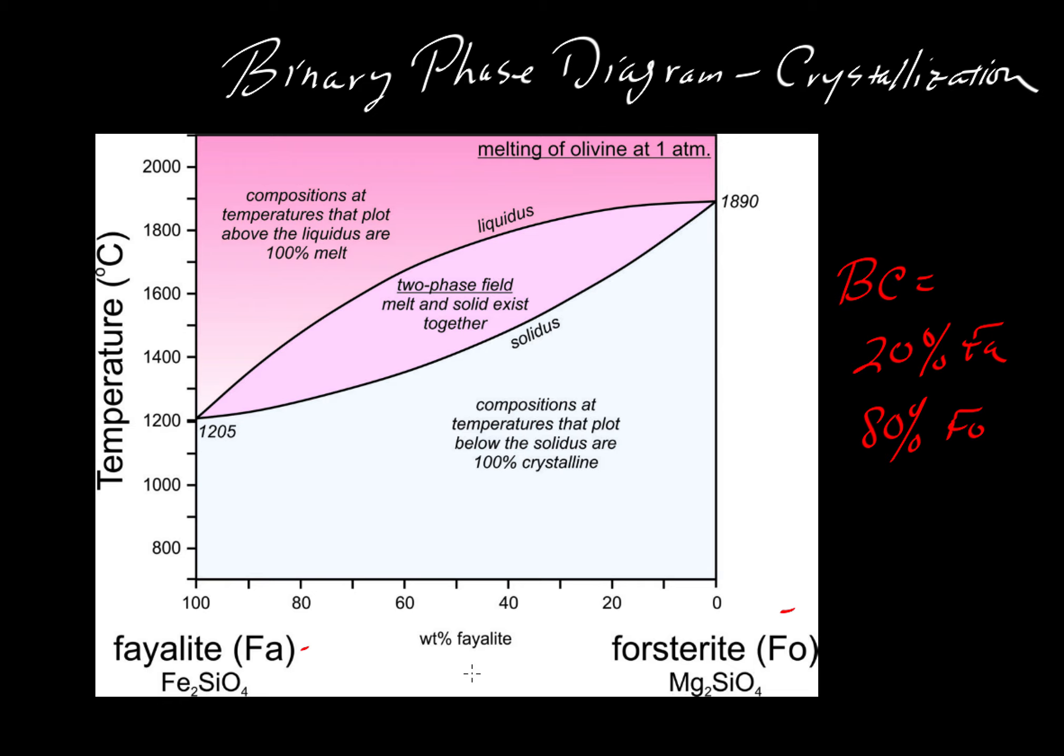Well, this curve shows weight percent fayalite, so if we have 20% fayalite then we would be over here. So 20% fayalite would be the same thing as 80% forsterite.